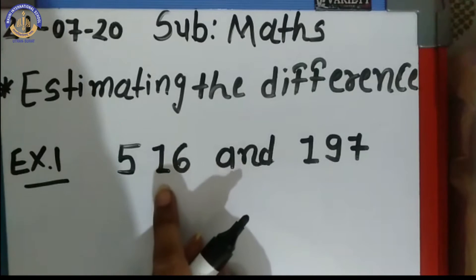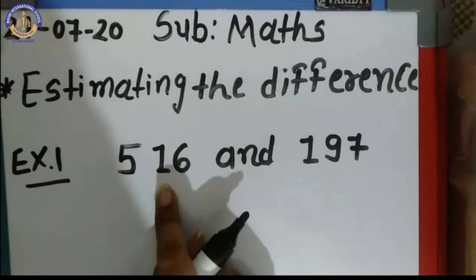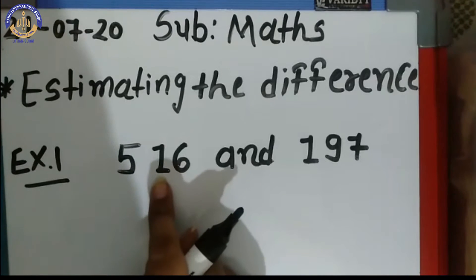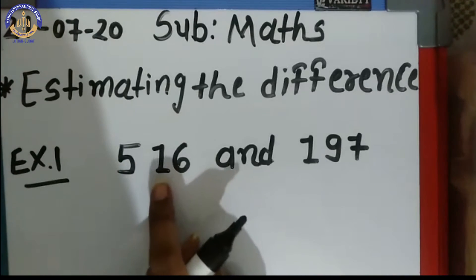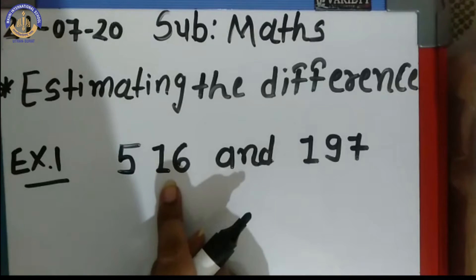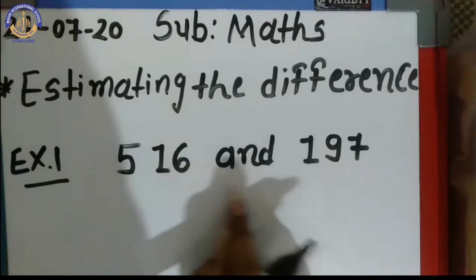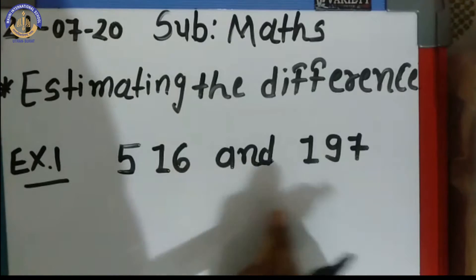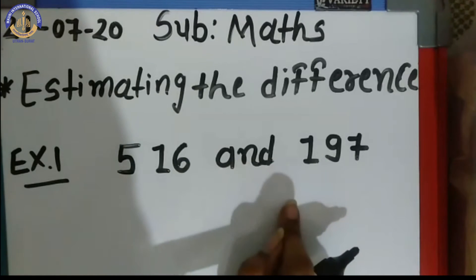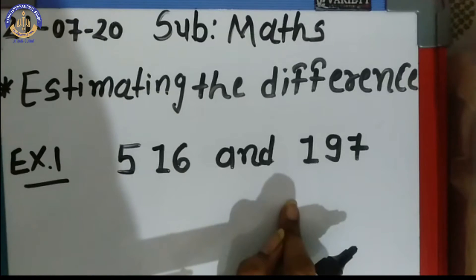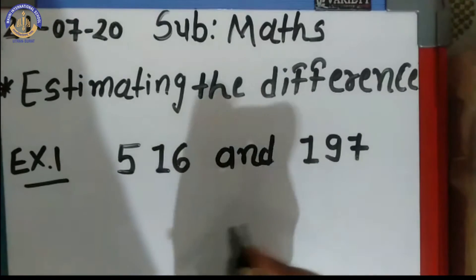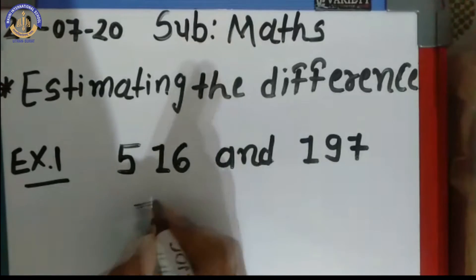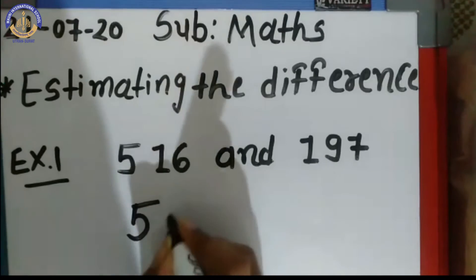In the tens place of 516, which number do we have? We have 1. It means the number is less than 5. If the number is less than 5, we round down. So, 516 is rounded down to 500.